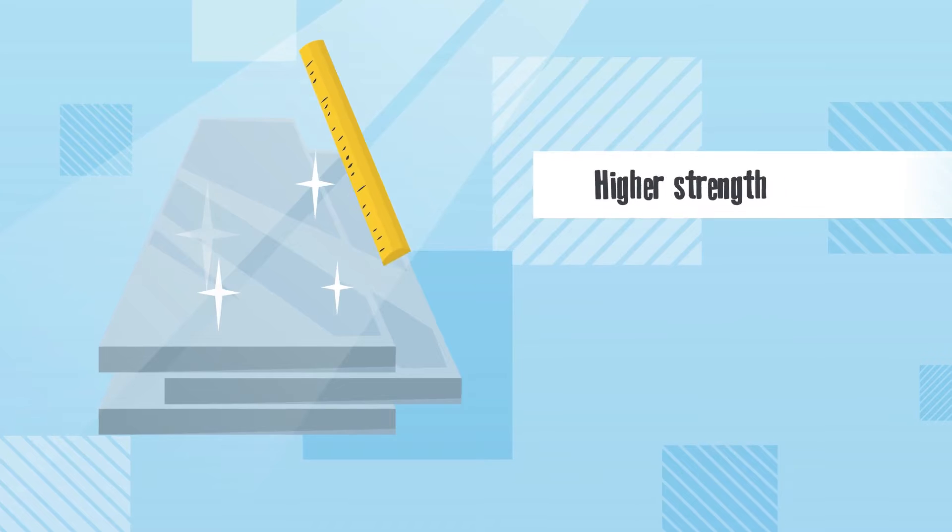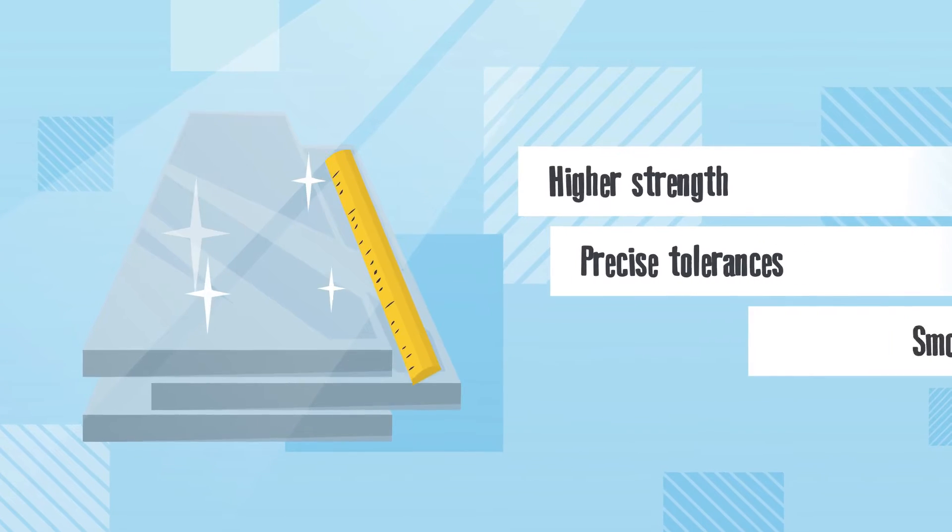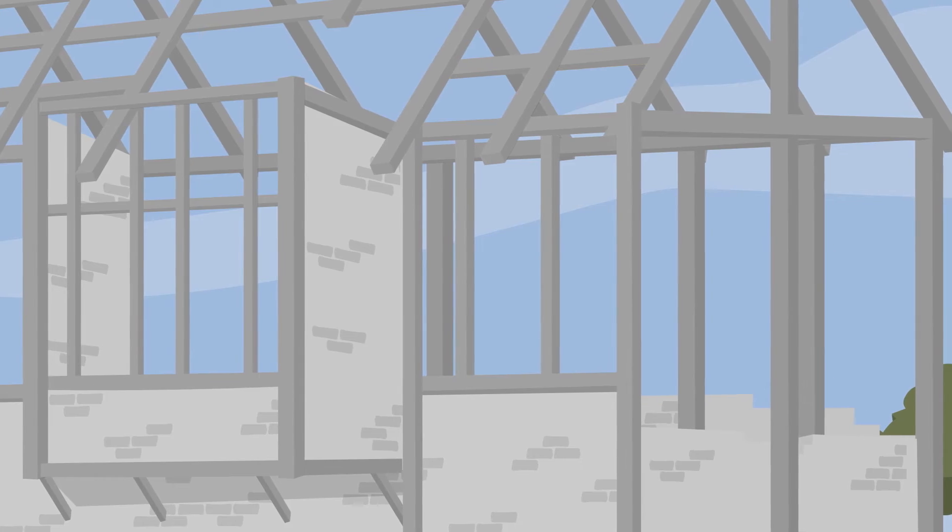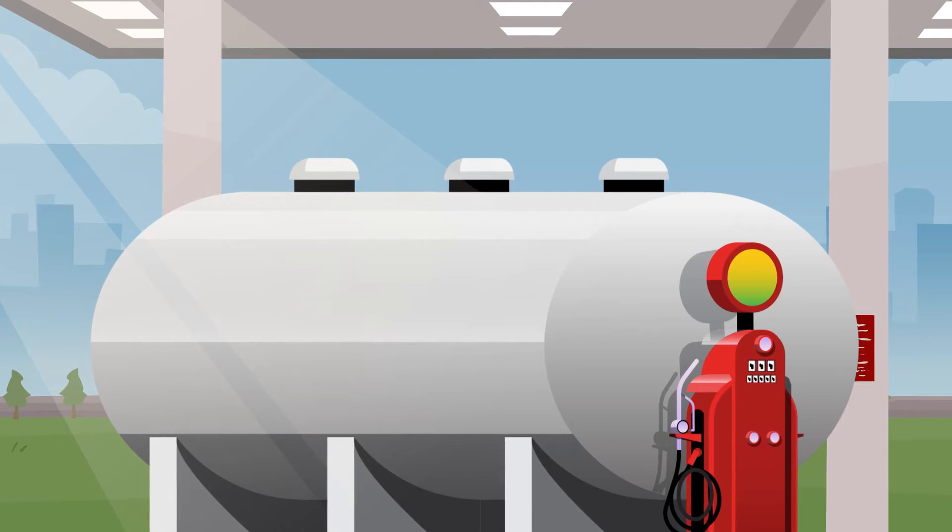It's known for its superior strength, precise dimensions, and smooth surface. Cold rolled steel is stronger and has that clean, smooth look, ideal for things like metal frames and fuel tanks.